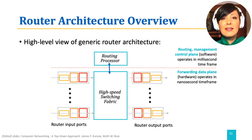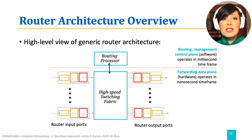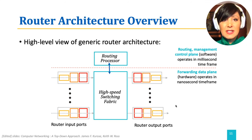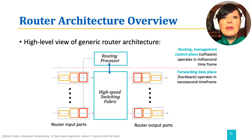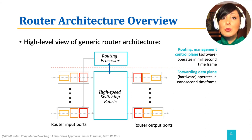Switching fabric, input ports, and output ports are the data plane elements. The switching fabric connects the input ports to the output ports. Input ports perform physical layer termination of the signal, link layer termination, and looking up in the forwarding table to find and direct the packet to the appropriate output port. Output ports store the outgoing packet and perform link and physical layer tasks needed to transmit the packet.